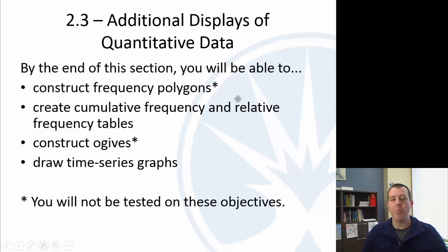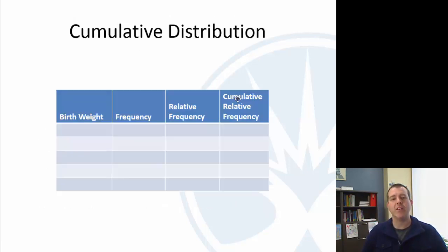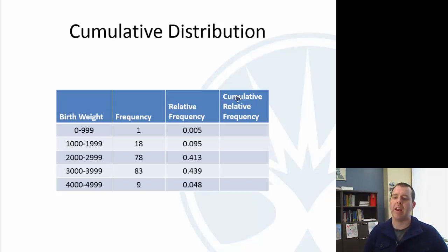So let's talk about cumulative distribution. We looked at this birth weight data in the last video about low birth weight. We had the birth weights of children and we made this table: 0 to 999, 1000 to 1999, etc. And we made a relative frequency column here. I've rounded a little bit differently than we did before to get a little more precision there down to the thousandths place.